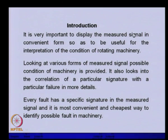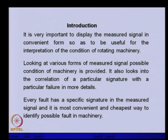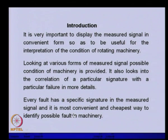The measured signal needs to be displayed in a convenient form which will be useful for finding the condition of the rotating machinery. Looking at various forms of the measured signal, the possible condition of the machine is provided. It also looks into the correlation of a particular vibration signature with a particular failure in more detail. Every fault has a specific signature in the measured signal, and it is the most convenient and cheapest way to identify possible faults in machinery.